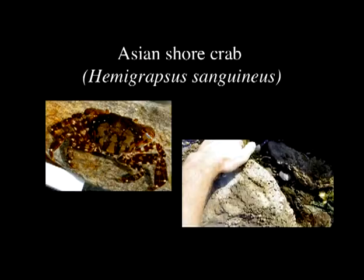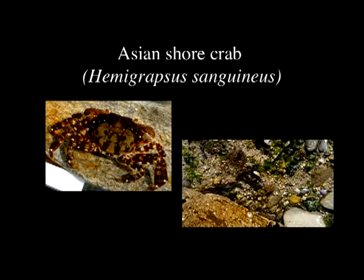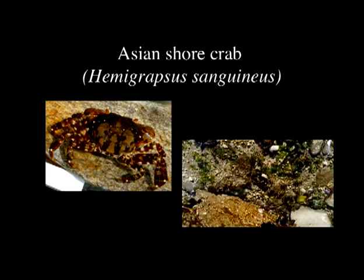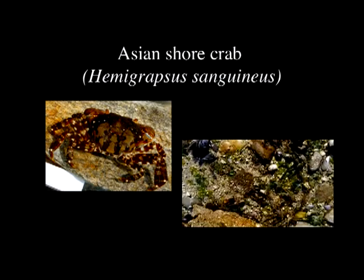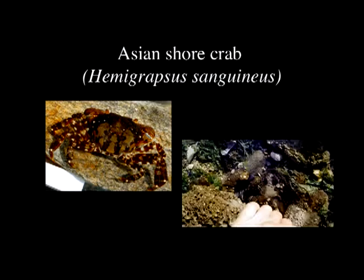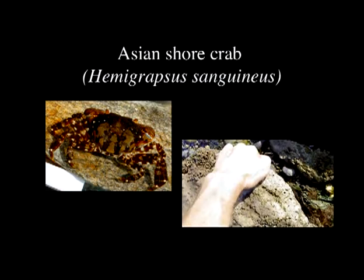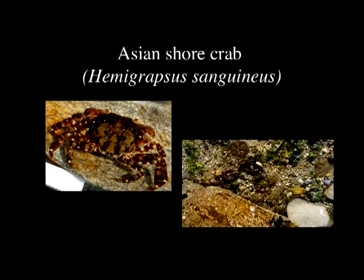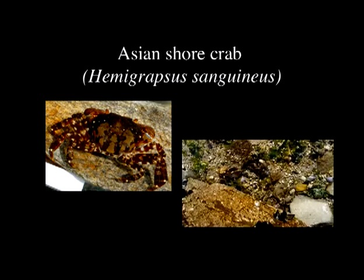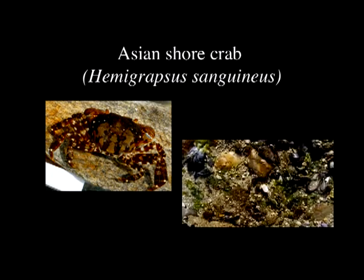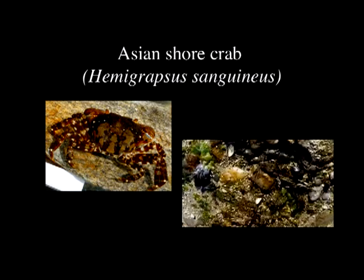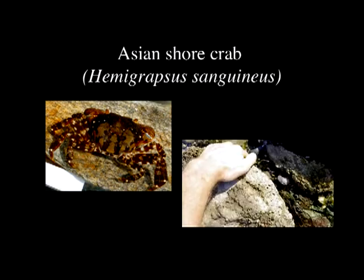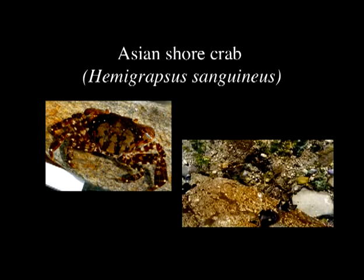One of the more pervasive predators we have on Long Island is the Asian shore crab, Hemigrapsus sanguineus. Until 30 years ago, Asian shore crabs were completely absent from Long Island. Since 1988, they spread from New Jersey all the way up to mid-coast Maine. They reached very high densities — you can turn over a rock and the ground is basically moving with crabs. They are quite high densities in the intertidal and potentially subtidal as well.